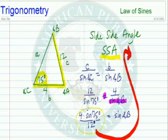4 times the sine of 75 divided by 12 gives us 0.3219, and that's equal to the sine of angle B.